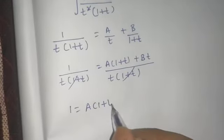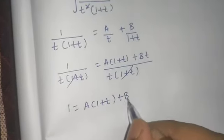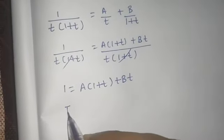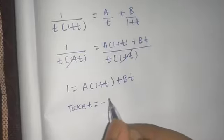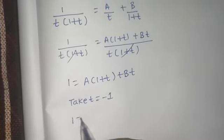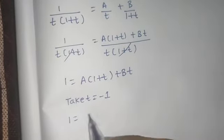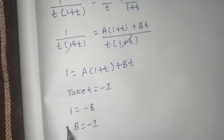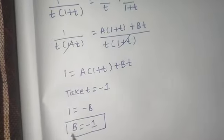Now we can easily find the value of A and B. First, take t as minus 1. If you take t as minus 1, this will become 0. So 1 equals B times minus 1, which gives minus B. So B is minus 1.